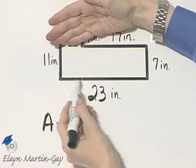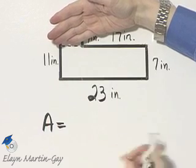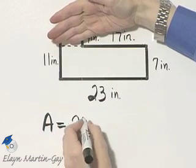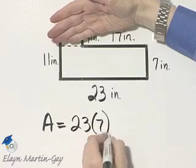Let's find this area. This area is simply a rectangle, length 23, with 7. So 23 times 7.